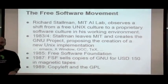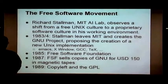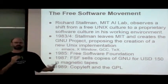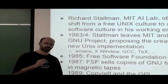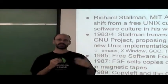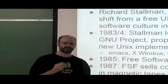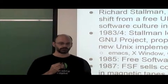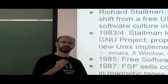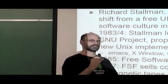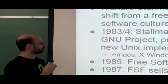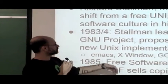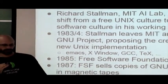Things got more organized when Richard Stallman, a programmer at the MIT AI Lab, observed a shift from a free Unix culture to a proprietary software culture. Around 1983-1984 he left MIT and created the GNU project, proposing a new free and open Unix implementation. Its first versions included the Emacs text editor, the X Window system, the GCC compiler, and the TeX tool.